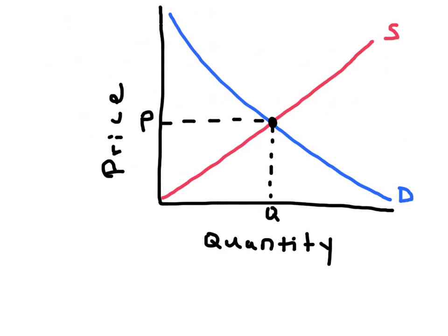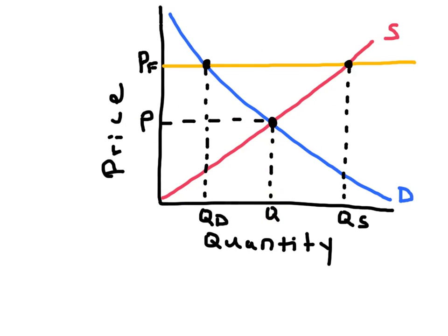Here is a market in equilibrium, where supply is equal to demand at price P and quantity Q. When the government establishes a price floor, the price is not allowed to go below this point. This means that the quantity supplied will be greater than the quantity demanded — we'll have a surplus.